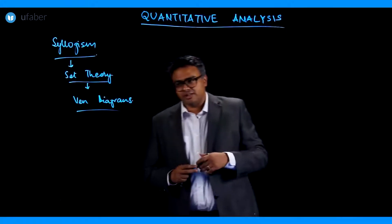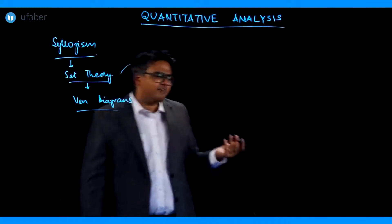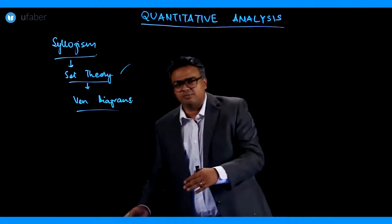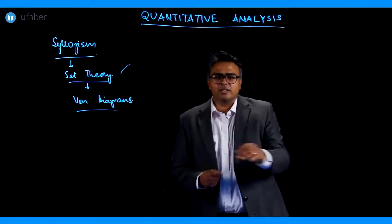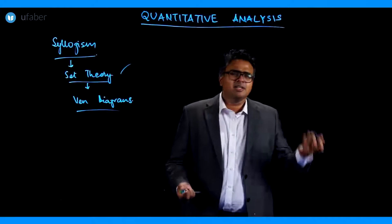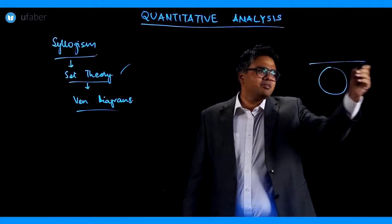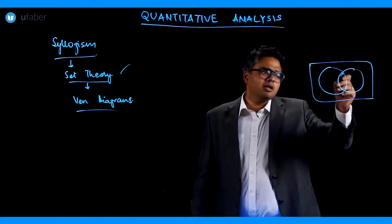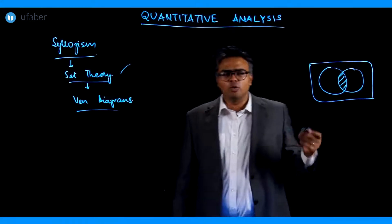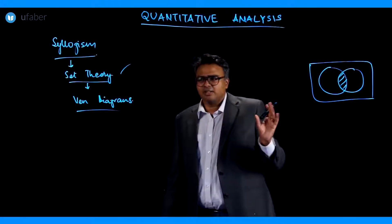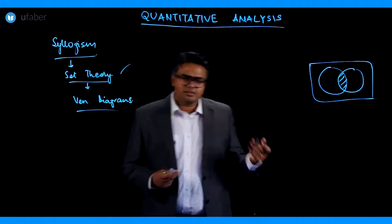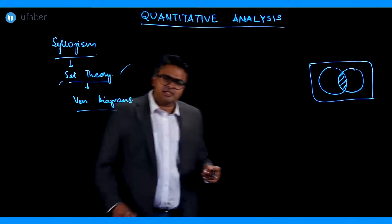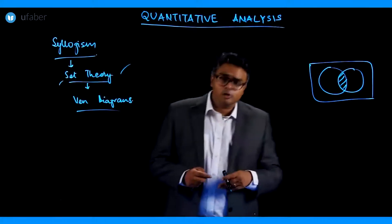On Set theory there are two kinds of questions. One kind is what we solved in the topic of Set theory — these many players play hockey, these many play football, these many play both sports, then find this or that. We used to draw the universal set, the players who play hockey, the players who play football, and find various numbers. Those questions are directly based on Set theory and they also appear in examinations.